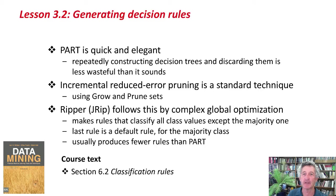PART is quick and quite an elegant algorithm. Repeatedly constructing decision trees and discarding them is less wasteful than it sounds. Incremental reduced-error pruning is a standard technique, and Ripper does incremental reduced-error pruning followed by a global optimization step. It usually produces fewer rules than PART. There's material in the course text on classification rules, so go and read that. The activity associated with this lesson involves using the experimenter to do more reliable comparisons between rule systems.